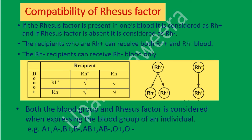Both the blood group and Rhesus factor are considered when expressing the blood group of an individual. Examples: A positive, A negative, B positive, B negative, AB positive, AB negative, O positive, and O negative.